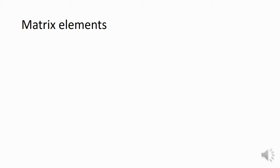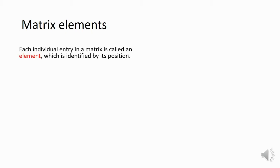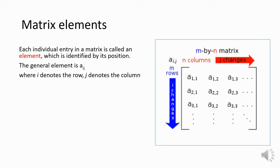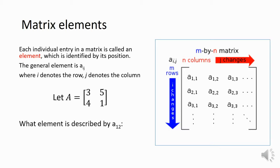Within a matrix, every element is identified by its position using a subscript ij, where i is the row and j is the column. For example, the one in the top left is row one, column one, so it's element a₁₁. If we want element a₁₂, that's the first row, second column, which is five. Element a₂₁ is the second row, first column, and we've got four.